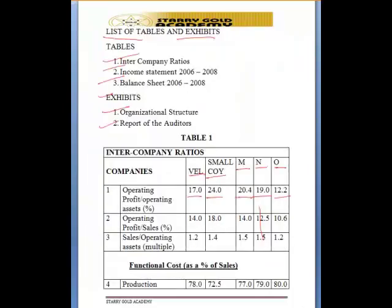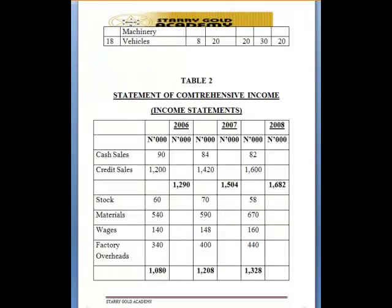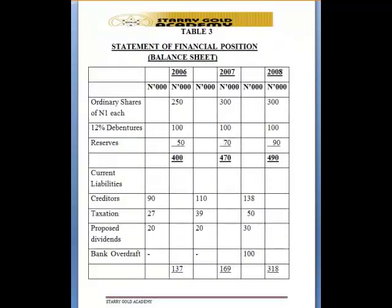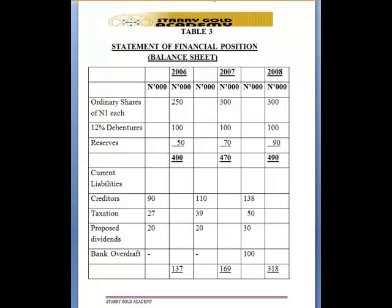We have made use of table one because this is the table that is relevant for what we are asked to do, even though we have table two, which gives us the income statement, and table three, which has the balance sheets. These two other tables may have been relevant if we had been asked to compare the performance of the organizations across the three years, but in this instance we have been asked to compare the company's performance with other similar companies in the same industry — that's the reason why we have not made use of table two and table three.